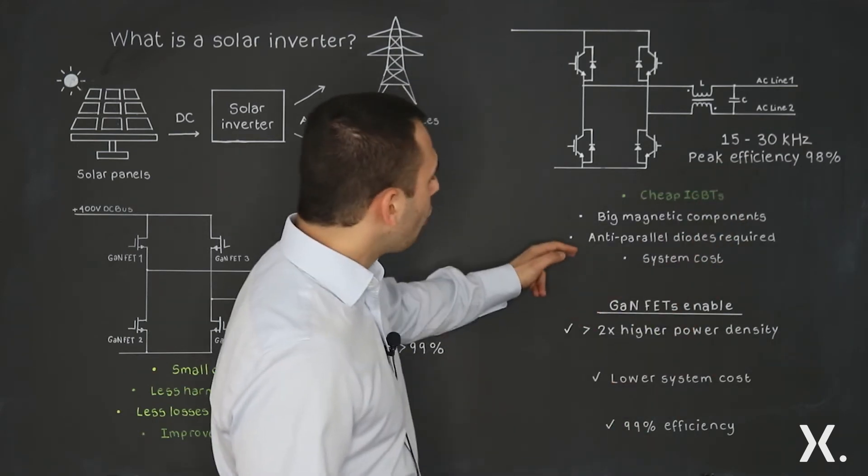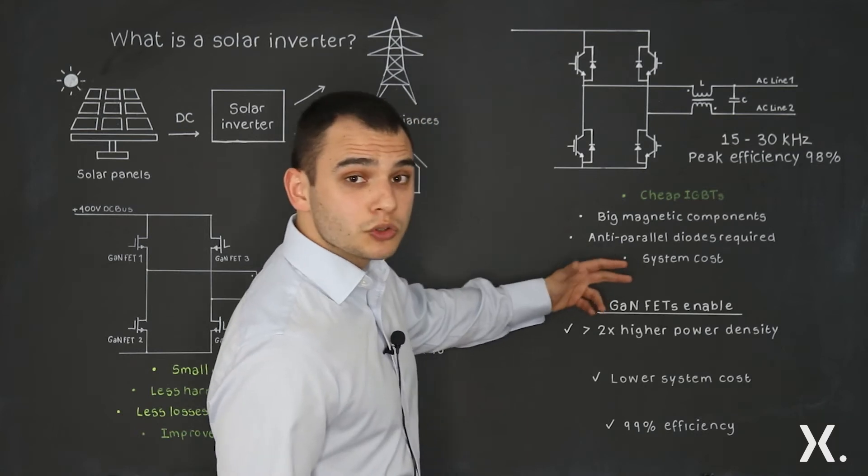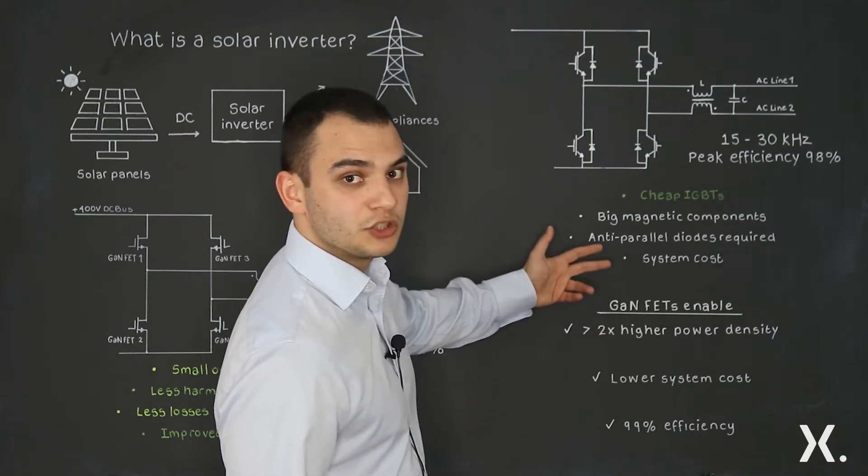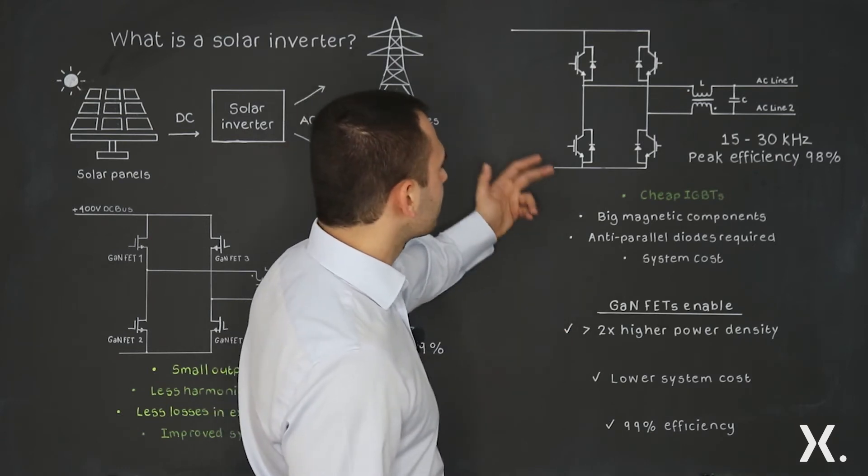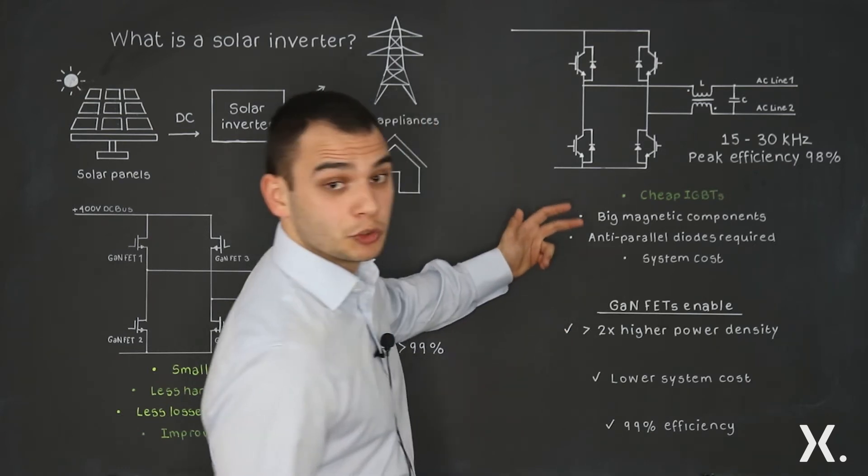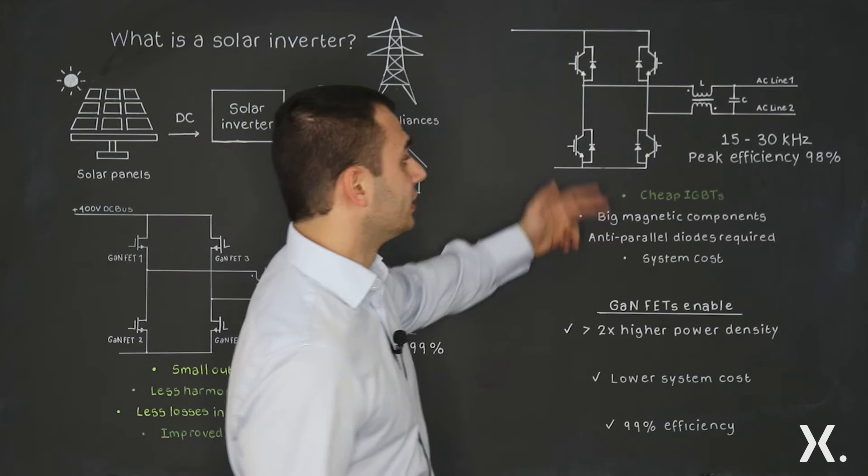These both contribute to the overall system cost, which is quite big for this with IGBTs because the magnetics are the majority of the cost in this converter.